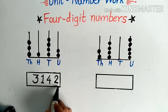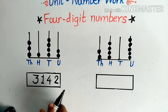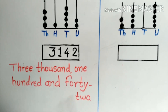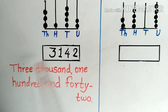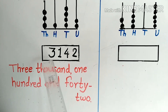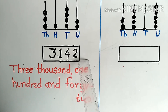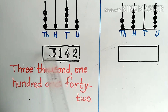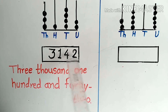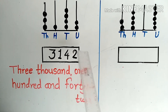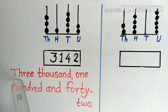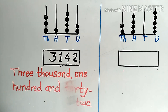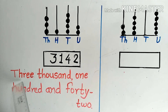So the number formed is 3142. With the help of these symbols we make this four-digit number. This is 3142.